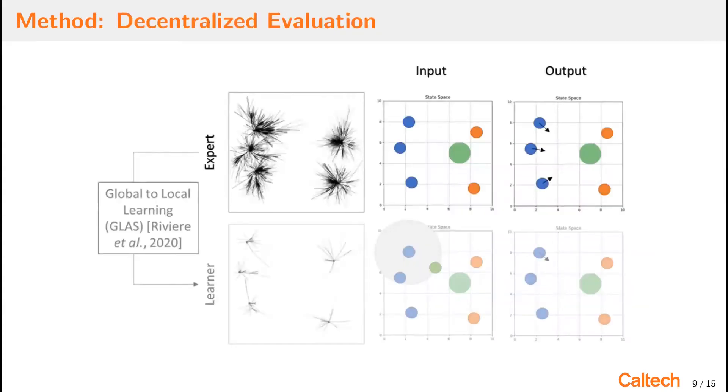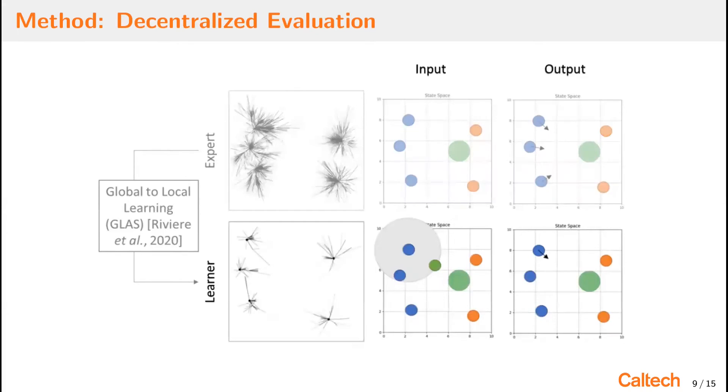The next extension we have to consider is how to decentralize the evaluation, such that the tree search can be evaluated at each robot with only local information. As we mentioned earlier, the expert is a centralized computation. This means that it inputs the full state information and outputs the coordinated team action. So here we can, on the right, we can see that each blue robot has an associated action. The learner is decentralized, which means that it inputs only local information about the robot of interest, here shown as a local sensing radius around the gray circle around the top left blue robot. In addition, its output is a local action, just the action for each robot.